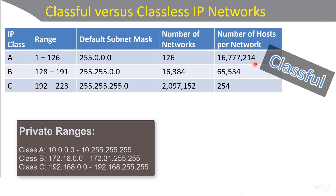You may ask why not 2^16 hosts. That's because you can't use the first or the last address within any given network. The first is the network number and the last is the broadcast number, so you can't use those for hosts. That's class A.